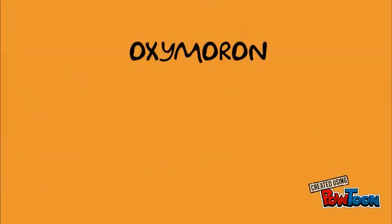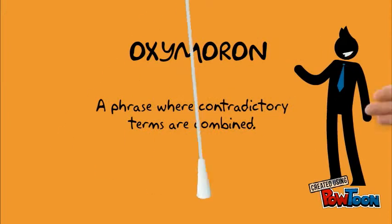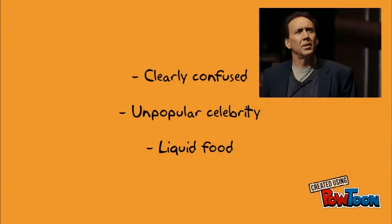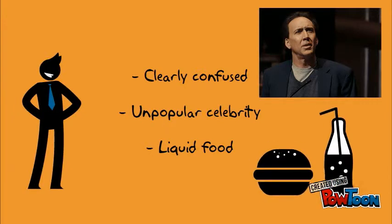The next literary device is an oxymoron. An oxymoron is a phrase where contradictory terms are combined. Clearly confused, unpopular celebrity, and liquid food are some examples.